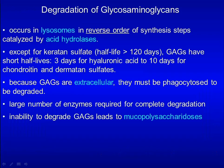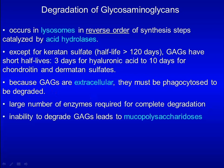Degradation of glycosaminoglycans occurs in lysosomes in reverse order of synthesis steps, catalyzed by acid hydrolases. Except for keratan sulfate, glycosaminoglycans have short half-lives: 3 days for hyaluronic acid, 10 days for chondroitin and dermatan sulfates. Because glycosaminoglycans are found extracellularly, they must be phagocytosed to be degraded. A large number of enzymes are required for complete degradation. Inability to degrade glycosaminoglycans leads to mucopolysaccharidosis.